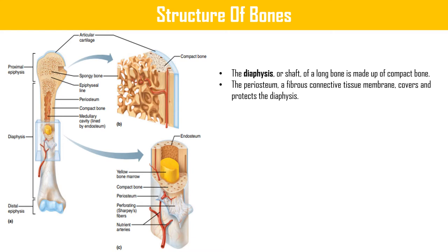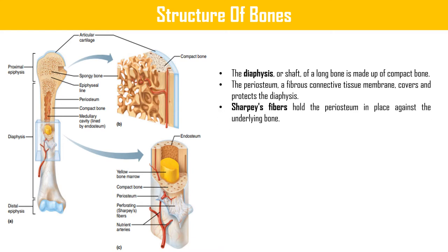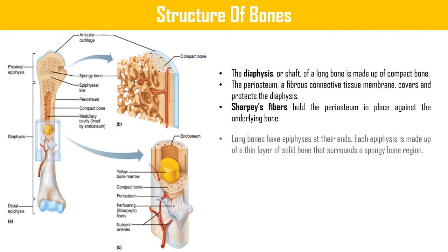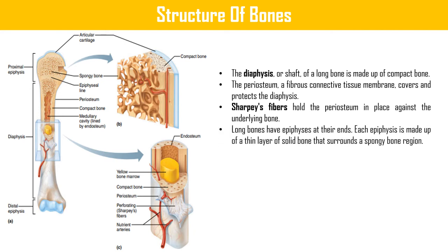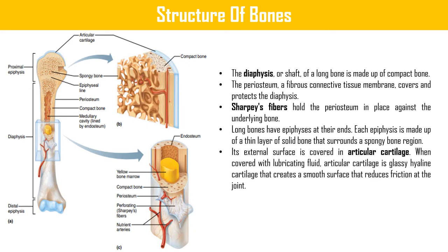The periosteum, a fibrous connective tissue membrane, covers and protects the diaphysis; Sharpey's fibers hold the periosteum in place against the underlying bone. Long bones have epiphyses at their ends; each epiphysis is made up of a thin layer of solid bone surrounding a spongy bone region. Its external surface is covered in articular cartilage — hyaline cartilage that creates a smooth surface reducing friction at the joint.